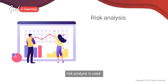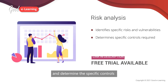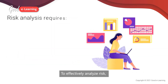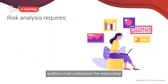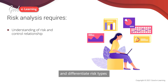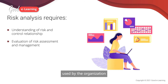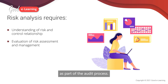Once a general risk assessment has been conducted, risk analysis is used to identify specific risks and vulnerabilities and determine the specific controls needed to mitigate them. To effectively analyse risk, auditors must understand the relationship between risk and control, and be able to identify and differentiate risk types and the controls used to mitigate the risk. They should also be able to evaluate risk assessment and management techniques used by the organisation, and understand that risk exists as part of the audit process.